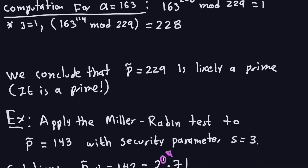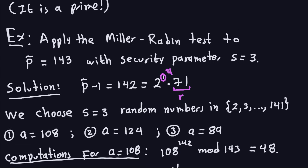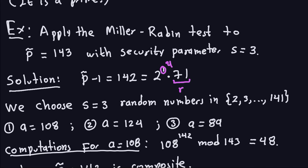Let me give you one more example — this time it will lead to the conclusion that it's composite. The second example is: apply the Miller-Rabin test to 143 with security parameter s equal to 3. I'm going to choose three numbers from 2 to 141: 108, 124, and 89. As always, we start with p̂ minus 1 = 142. I factor it as a power of 2 times an odd number, so u=1 and r=71.